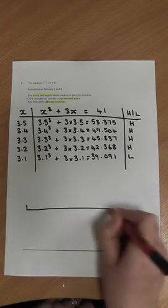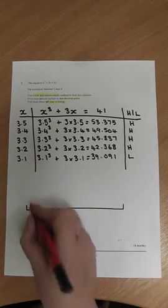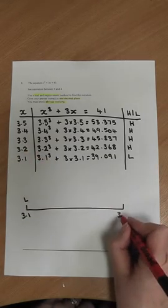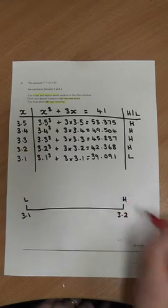Once we've got it at this stage where it's in between two numbers, one being too high and one being too low, we draw our number line along the bottom. We'll put the 3.1 to the left and that was too low and we'll put the 3.2 to the right and we'll put an H for too high.